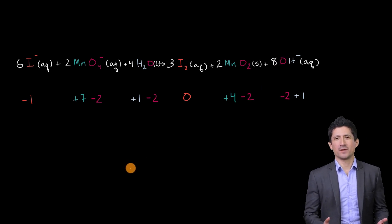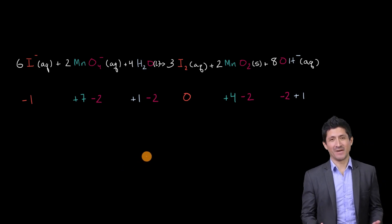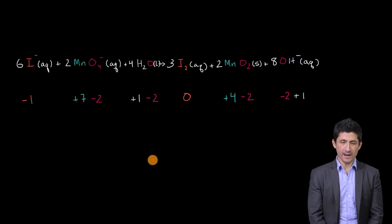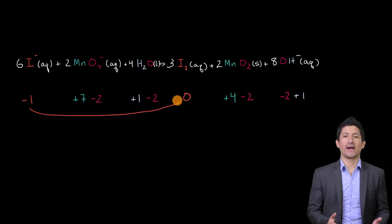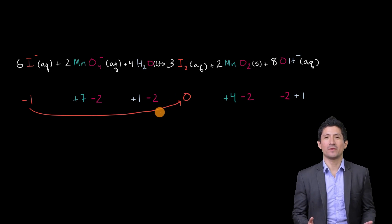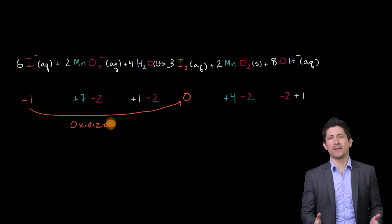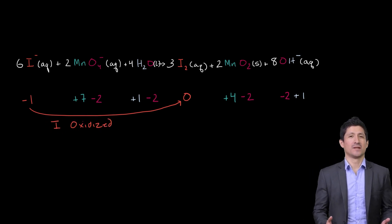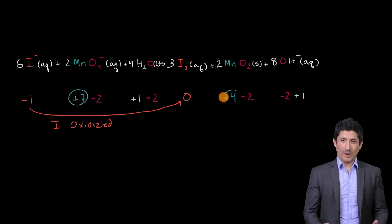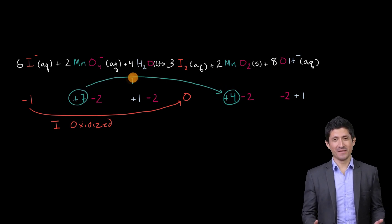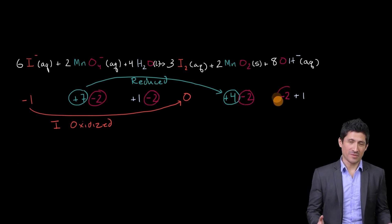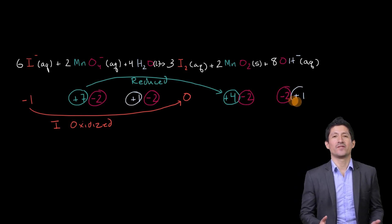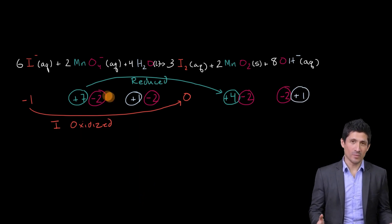So now let's think about who's been oxidized and who's been reduced. Remember, oxidation is losing electrons — OIL RIG — reduction is gaining electrons, or a reduction in the oxidation number. Looking at iodine, we go from an oxidation number of negative one to zero, so it has lost electrons and has been oxidized. Looking at manganese, we go from plus seven to plus four — the oxidation number has gone down, so it has been reduced. Oxygen has a negative two oxidation number on both sides, and hydrogen has plus one on both sides, so nothing changes there. The iodine has been oxidized and the manganese has been reduced.